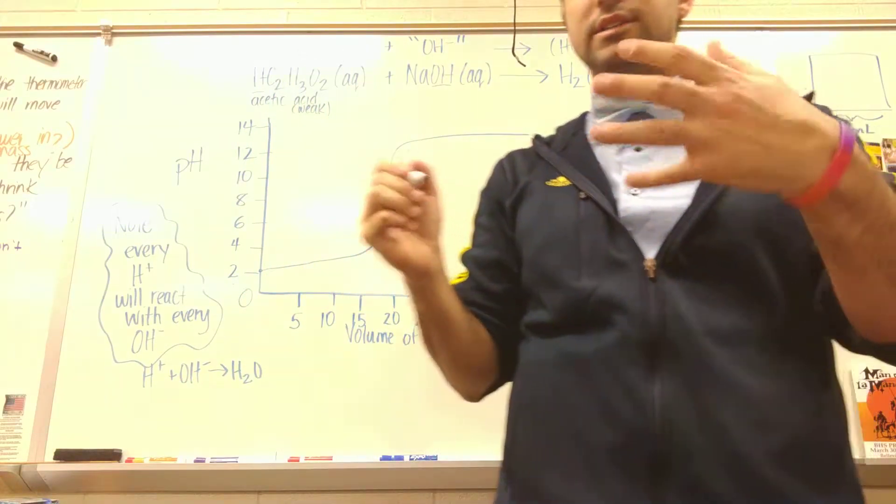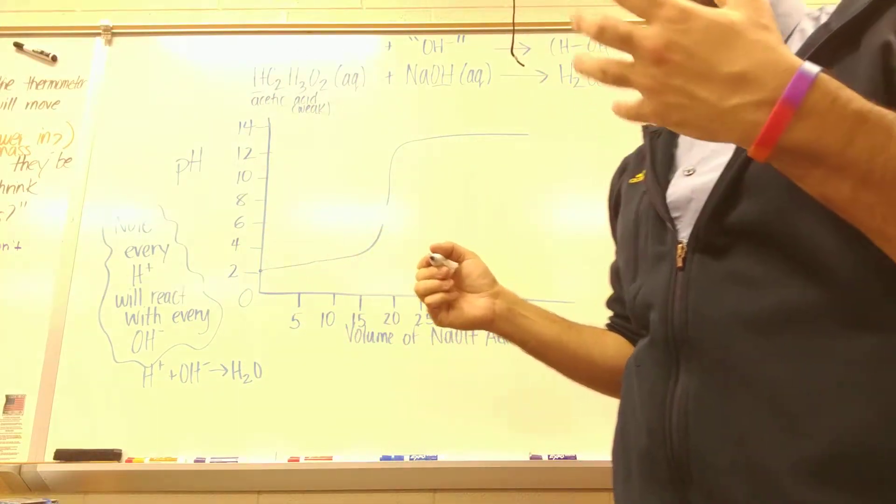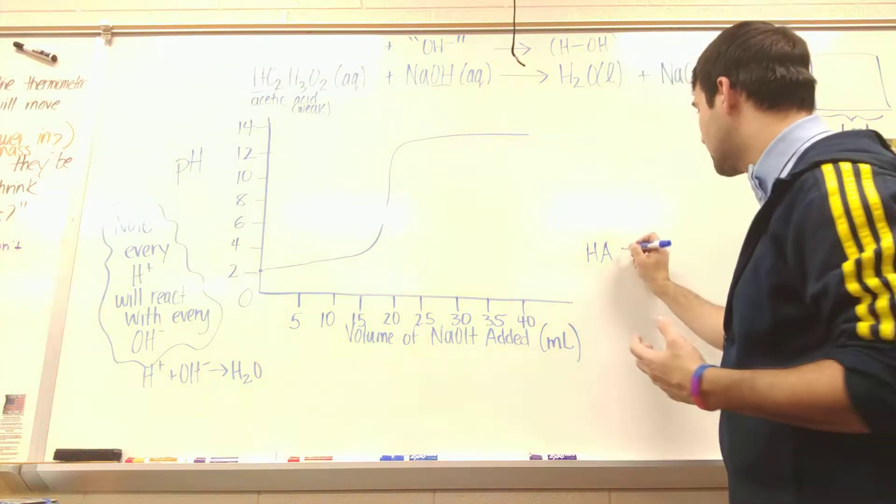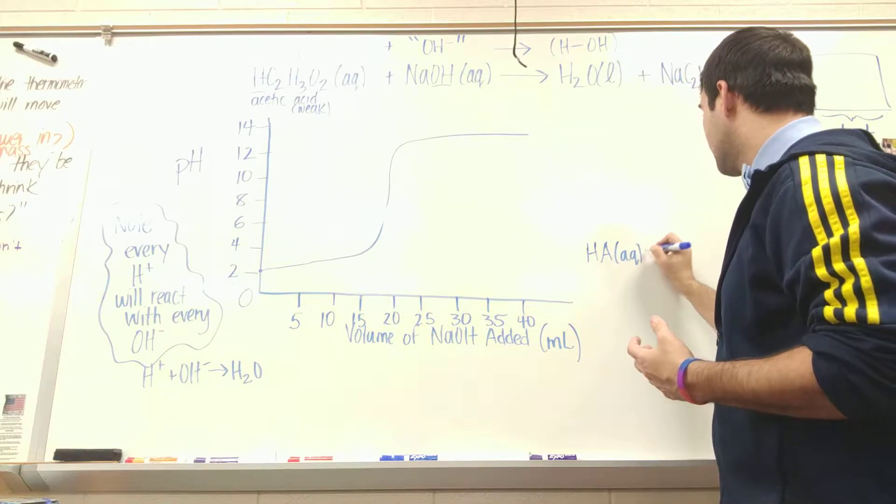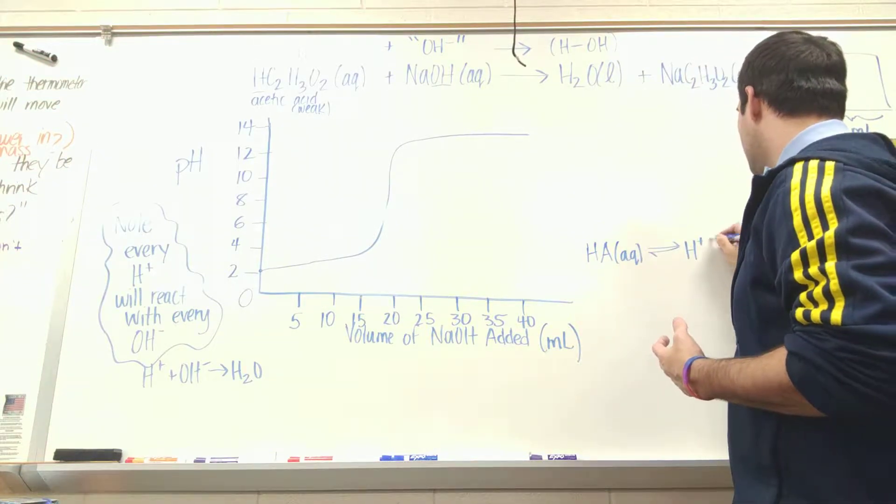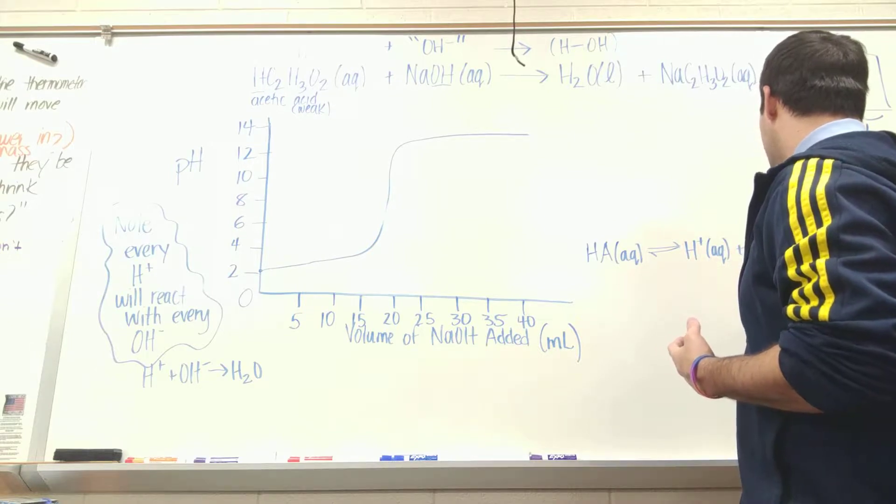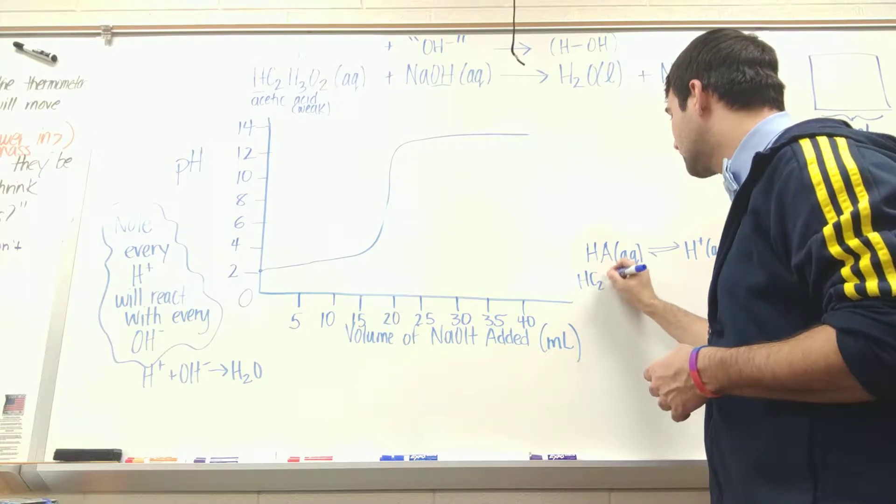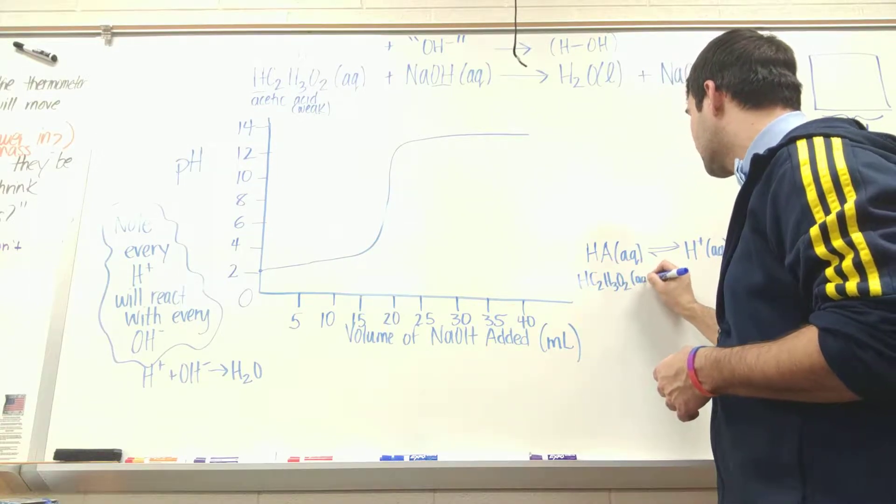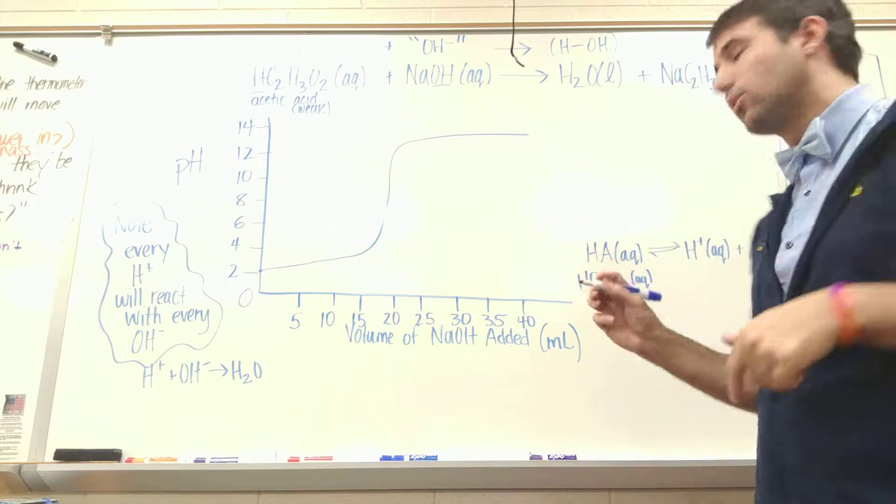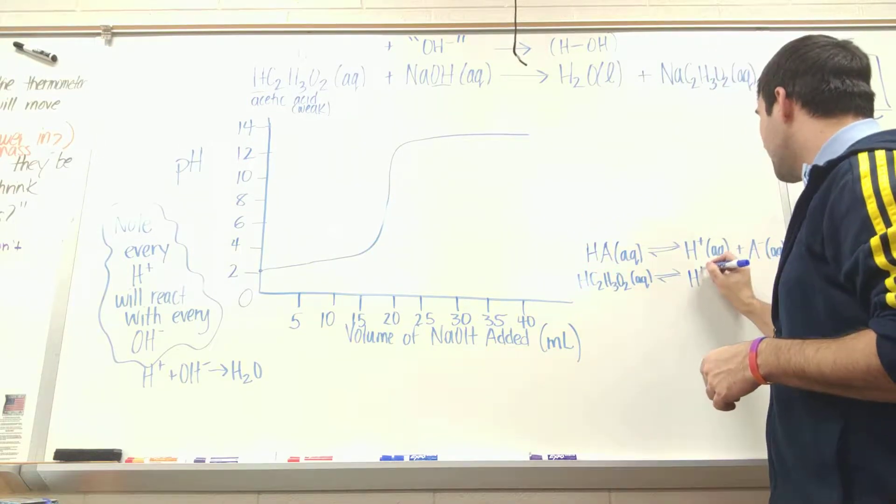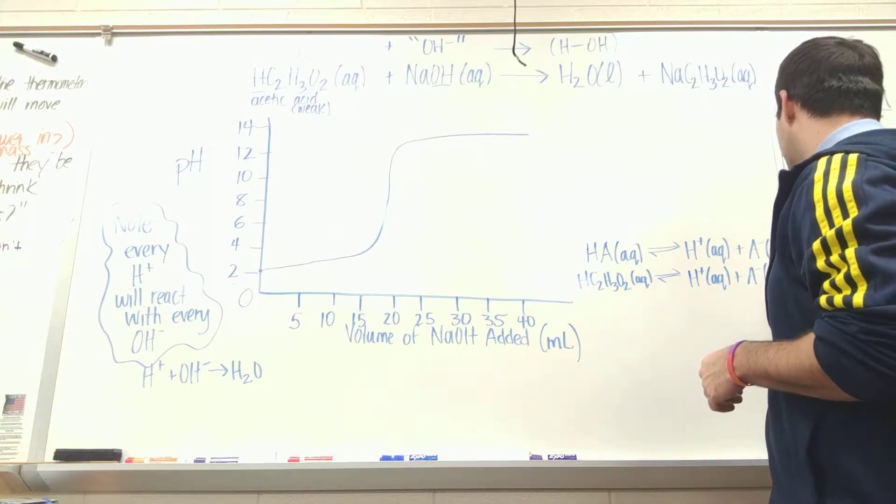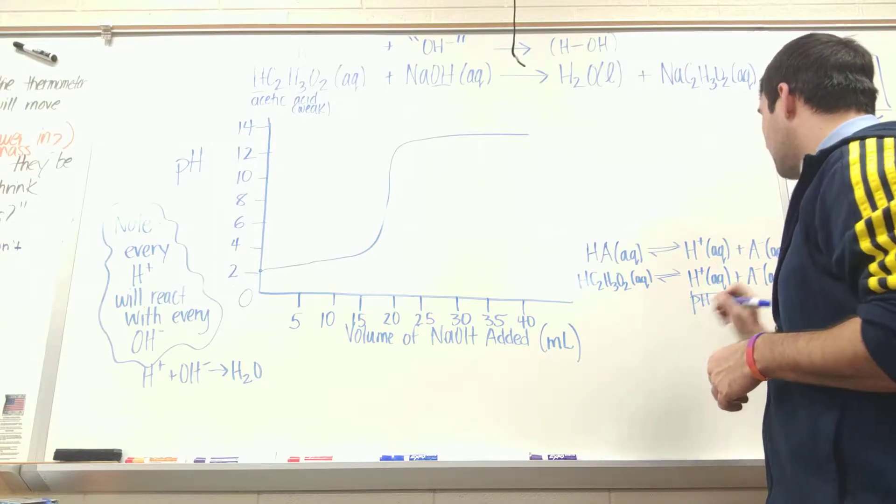It's a weak acid, so it tends to be in equilibrium when it dissociates. When I say dissociation, if I have a weak acid HA aqueous, it can break apart into H+ aqueous and A- aqueous. So for acetic acid it would be HC2H3O2 aqueous, and some H+ will come off and some A- will come off. And we use this H+ to solve for pH.